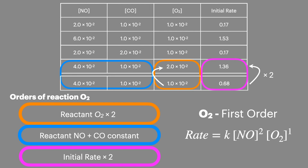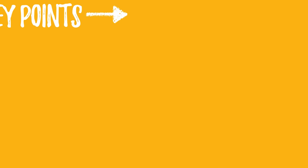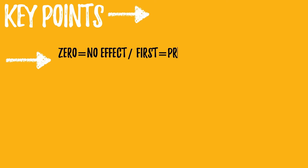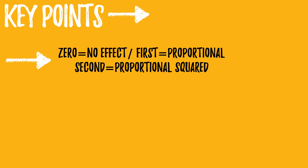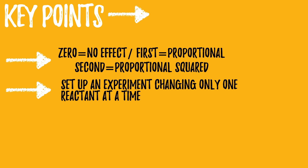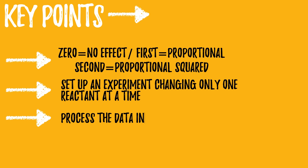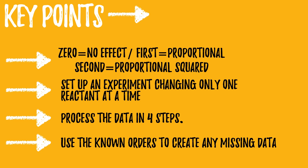Let's have a look at the essential points for your revision notes. Orders of reaction: zero order has no effect on the initial rate; first order has a proportional effect on the initial rate; second order has a proportional squared effect on the initial rate. When you do this, set up an experiment changing only one reactant at a time — it'll make it much easier to work on the data. Process the data in those four easy steps discussed at the beginning of the video, and then use any known orders to calculate any missing data when given an exam question.